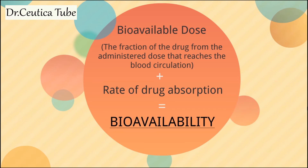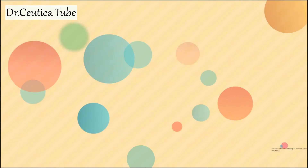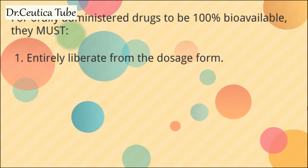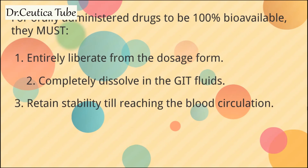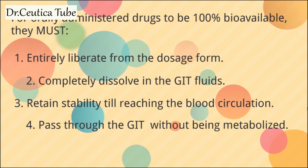While about 90% or more of drugs are taken orally, for such drugs to be 100% available in the general circulation there are some conditions that must be met. First, the drug must be entirely liberated from the dosage form, whether it's a tablet, a capsule, or any other oral dosage form. Second, it must also completely dissolve in the gastrointestinal fluids. Third, the drug should retain its stability until it reaches the blood — it should withstand the gastrointestinal fluids.